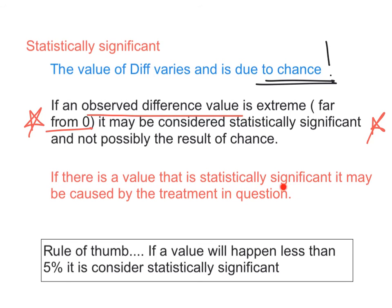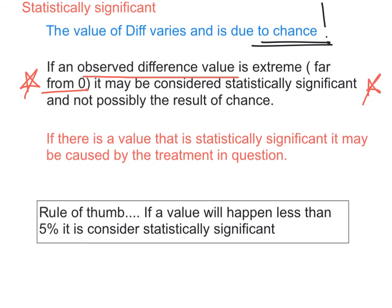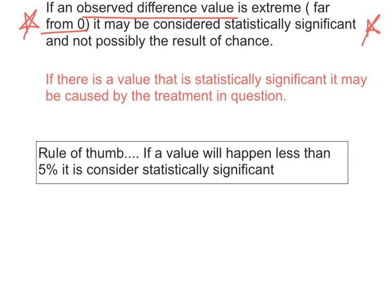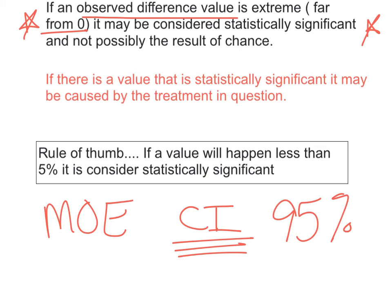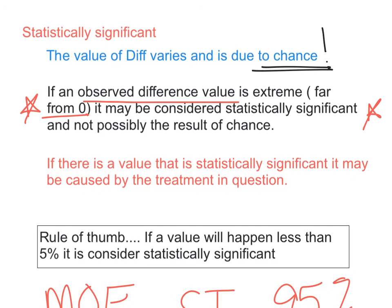If there is a value that is statistically significant, it may be caused by the treatment in question. So the rule of thumb says if a value will happen less than 5%, it is considered statistically significant. Now where does that 5% come from? Well think about this. Yesterday we talked about margin of error and confidence intervals. And we said our confidence interval is 95%. We are 95% sure a value is going to occur between two numbers. Therefore, we are uncertain about the other 5%. Hence, that's where this 5% comes from, the part that is considered statistically significant. Okay, so I can't stress this enough. The difference varies occurrence due to chance. If you have somebody far from the mean, it may not be chance anymore, and it might be considered statistically significant.